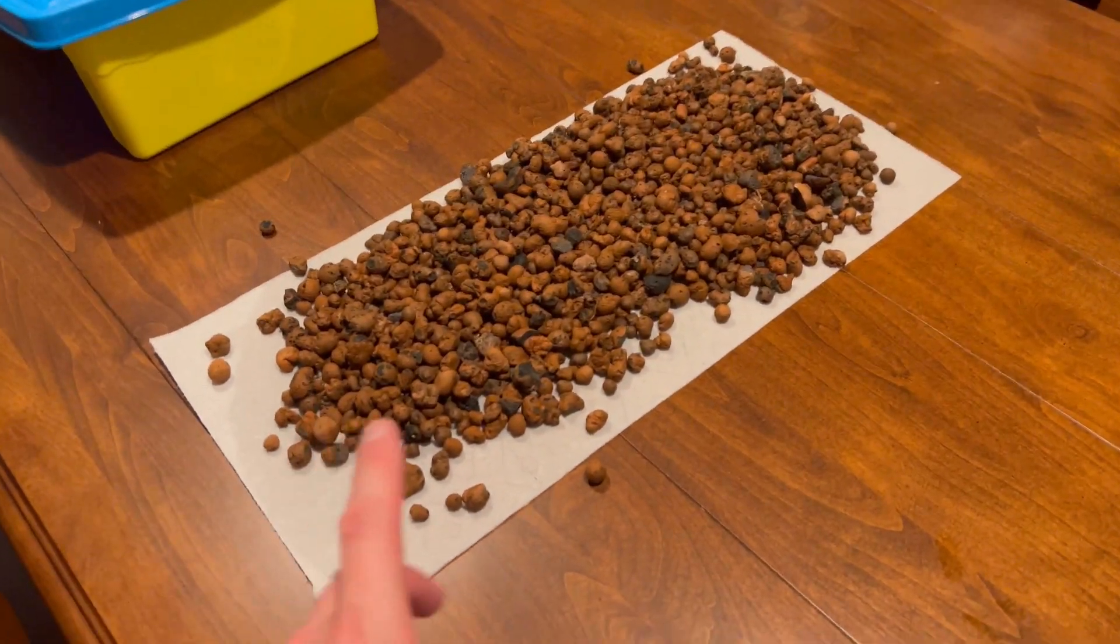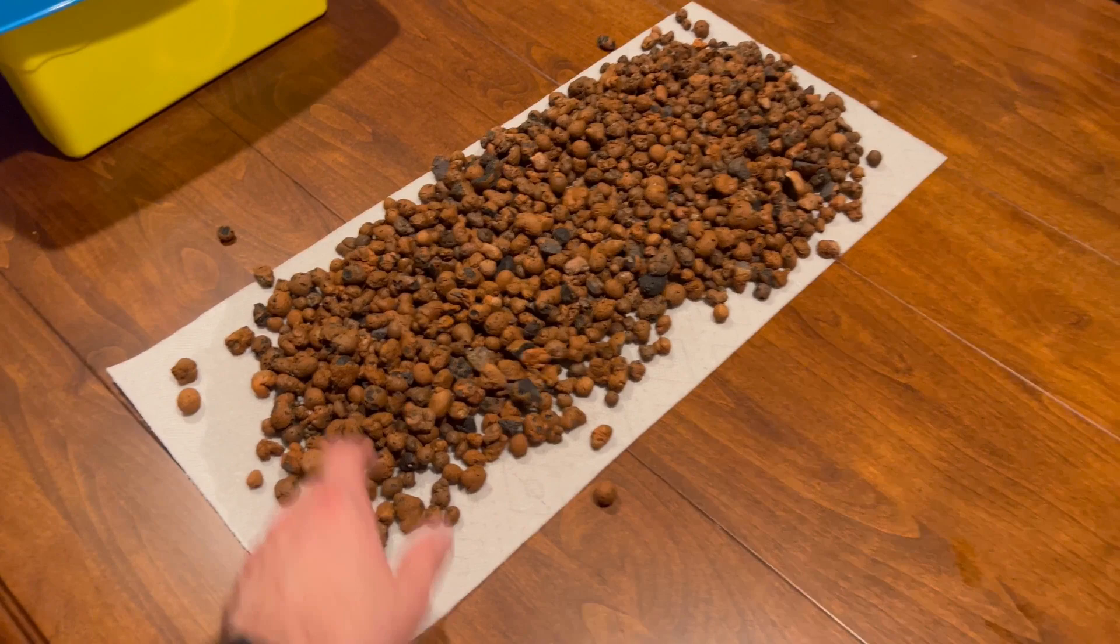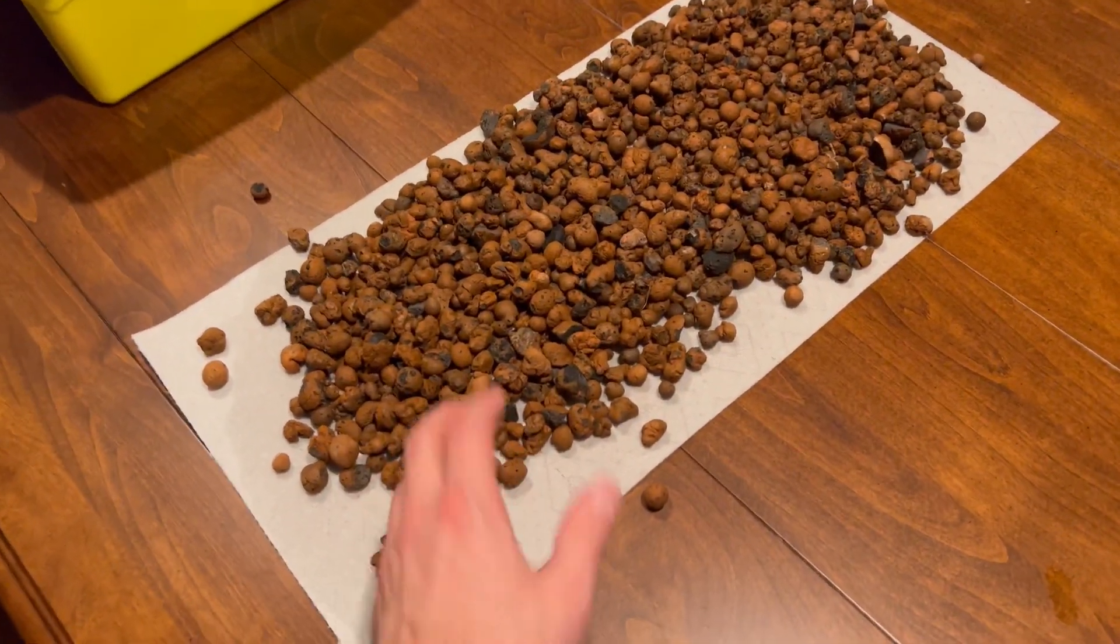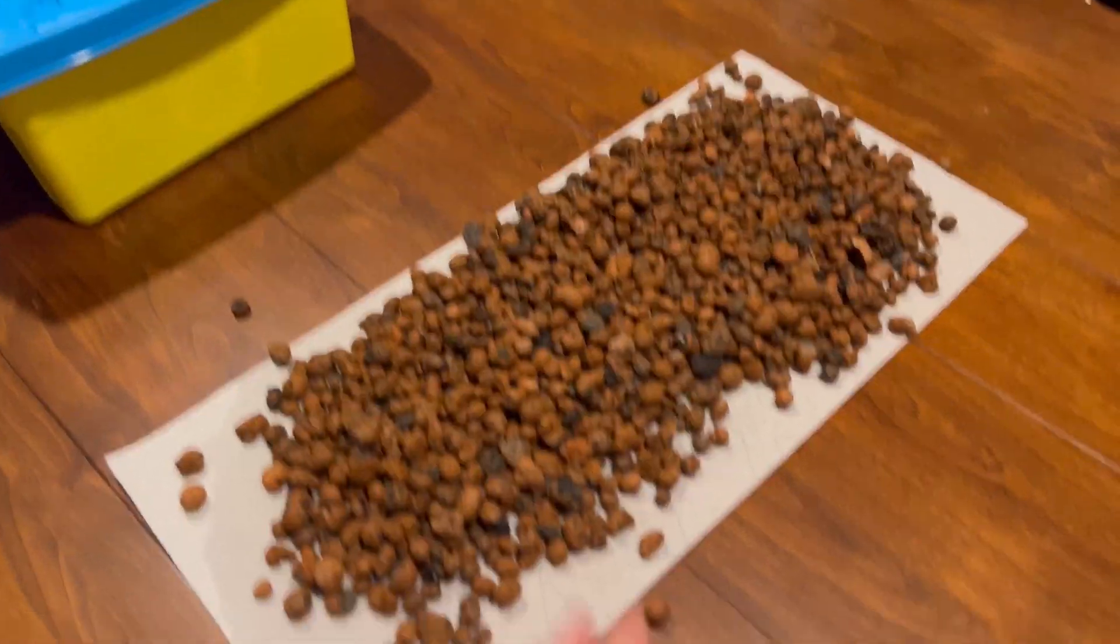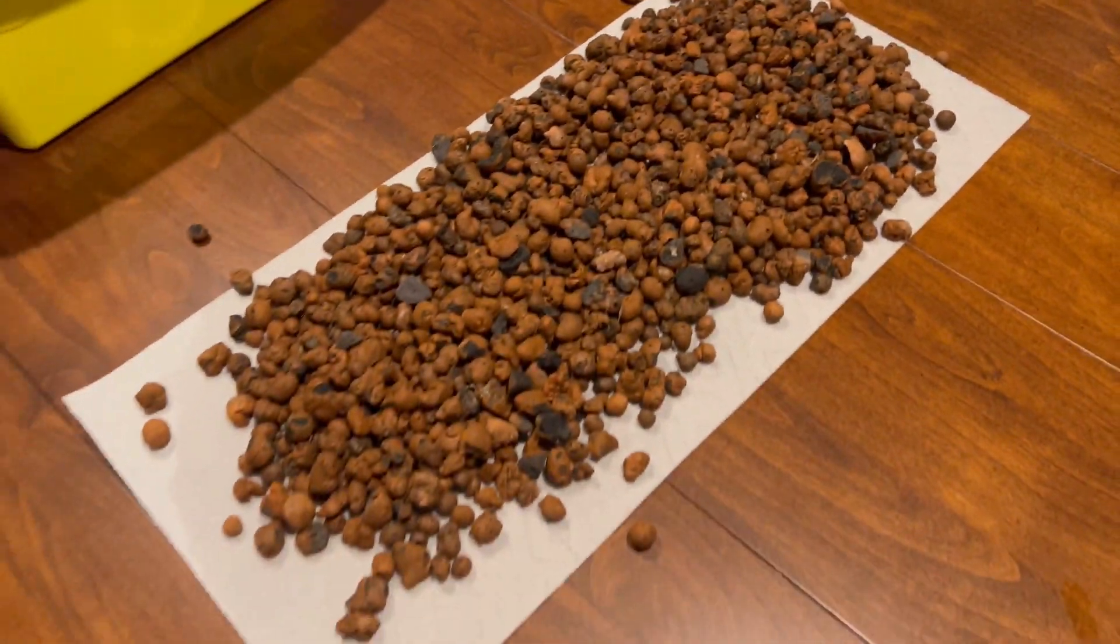When it comes to the clay pebbles, what I do is I simply put a large paper towel down and I have this little sifting dish that I just run these through the water, kind of throw them around a little bit, clean them up, and then I let them air dry basically overnight and then they're ready to go again.